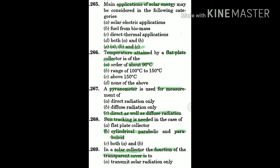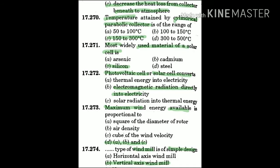Question 269: In a solar collector, the function of the transparent cover is — the answer is C: to decrease the heat loss from the collector beneath to the atmosphere.